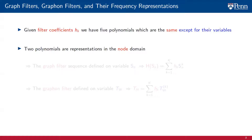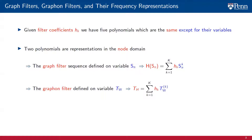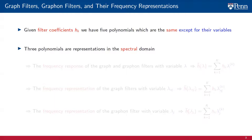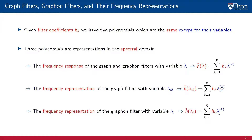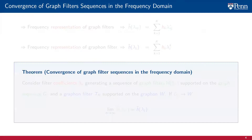Two of these polynomials are representations in the node domain: the graph filter sequence H of Sn, which is a polynomial in variable Sn, and the graphon filter Th, which is the same polynomial defined in variable Tw. The other three polynomials are representations in the spectral domain. The most important of the three is the frequency response of the graph and graphon filters, which is a polynomial on the scalar variable lambda. The frequency responses of the graph filter and the graphon filter are the same, because the graph filter and graphon filter are the same algebraic object. Evaluating the frequency response at the graph eigenvalues gives the frequency representation of the graph filter, and evaluating it at the graphon eigenvalues gives the frequency representation of the graphon filter.